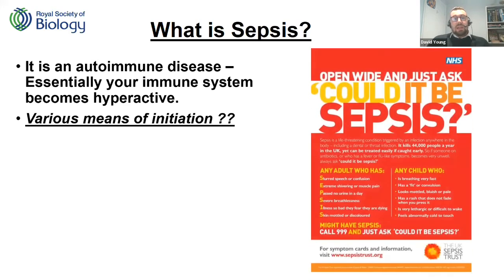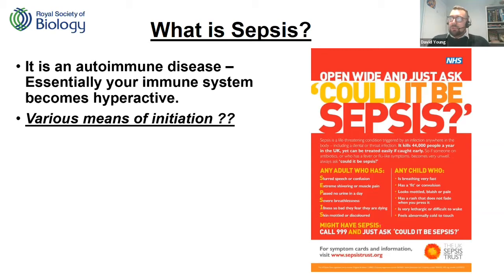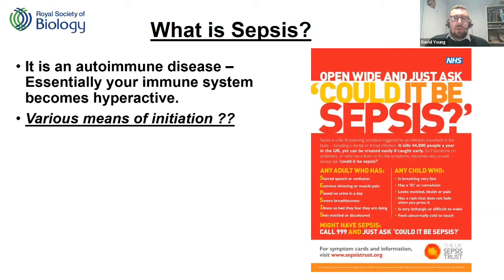Sepsis is often referred to as a killer in the shadows of other diseases because its symptoms — slurred speech and confusion, extreme shivering and muscle pain, no passing urine in a day, severe breathlessness and discolouring of skin — all align with other diseases too. It's quite difficult to pinpoint in the early stages, but early diagnosis is really important, as we'll see from the statistics.